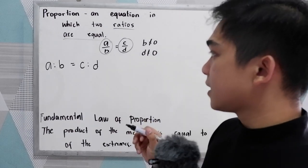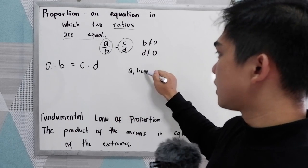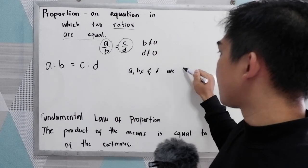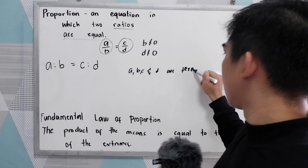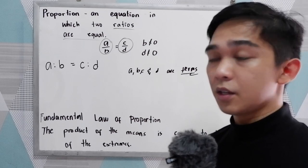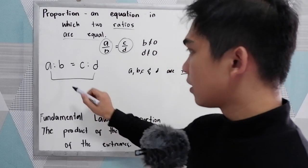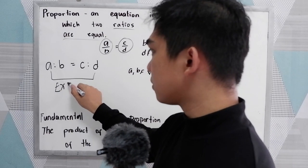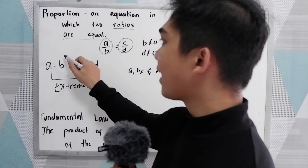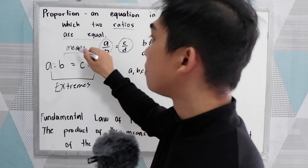A, B, C, and D are what we call the terms of our proportion. While A and D are what we call the extremes, and B and C are what we call the means.